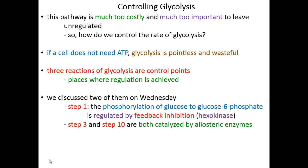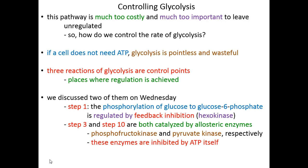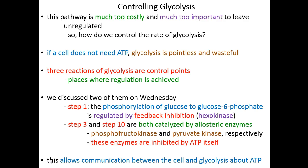The other two control points are step 3 and step 10. Both are catalyzed by allosteric enzymes — PFK and pyruvate kinase, respectively. Because these are allosteric enzymes, they have secondary binding sites for allosteric effectors, and the allosteric effector that regulates them potently is ATP itself. If ATP levels are high, these enzymes are inhibited and glycolysis halts at steps 3 and 10. If step 3 is inhibited by ATP, step 2 will back up, making too much fructose-6-phosphate. Soon, step 1 backs up, glucose-6-phosphate levels climb, they feedback-inhibit hexokinase, and glycolysis shuts down completely — a very potent regulation system.